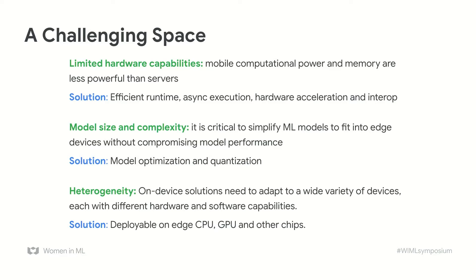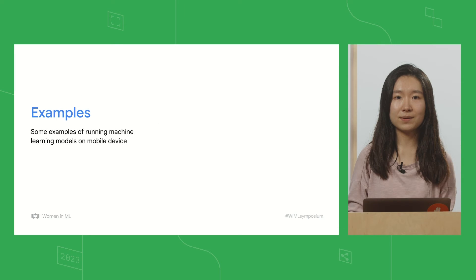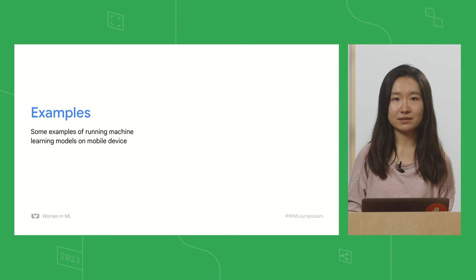Lastly, about heterogeneity: Android has a vibrant ecosystem with a wide variety of devices, each with different hardware and software capabilities. To adapt to that, on-device solutions need to be deployable on edge CPU, GPU, and other chips. I will now show you some interesting examples of running machine learning models on mobile devices. You can find these demos on the tensorflow.org website — the code is all open-source on GitHub, so feel free to download and play with it.